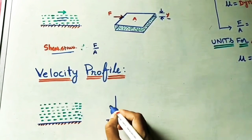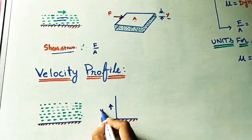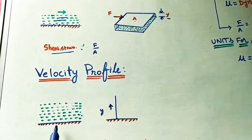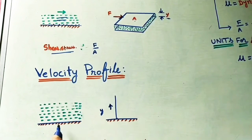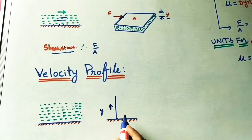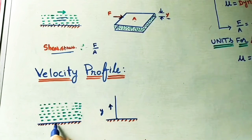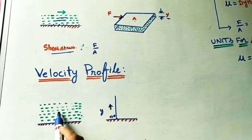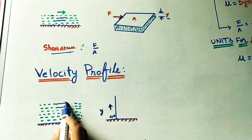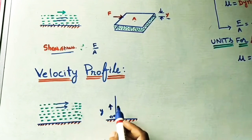In the velocity profile, taking the vertical y-direction: at the solid surface, velocity is zero (v = 0) because of the adhesive force between the surface and the liquid particles. Above that, taking one layer and then another layer.